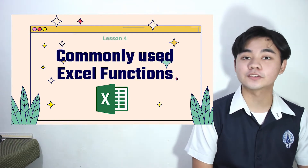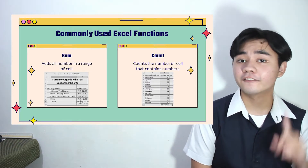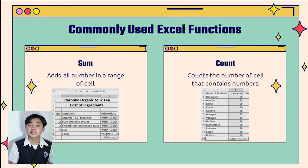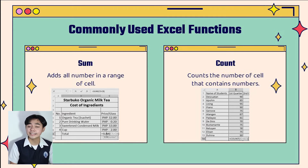Now let's move on to commonly used functions. First is SUM, which simply adds all the numbers in a range. Second is COUNT, which counts the number of cells that contain a number. That's it for my session, and I am now passing the torch to Ichi Nagase to further discuss the advanced techniques in using Microsoft Excel.